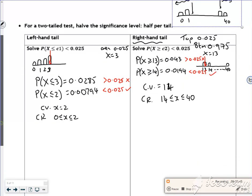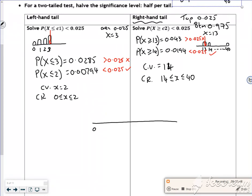On my picture from 0 to 40, I've got x = 2 as my critical value. Anything from 2 and below is reject H₀. From 14 onwards to 40 is also reject H₀. The acceptance region would be 3 to 13, so 3 to 13 is accept H₀.